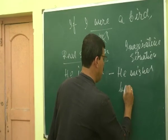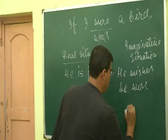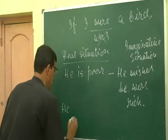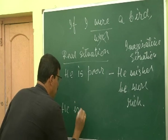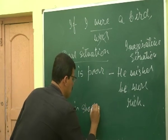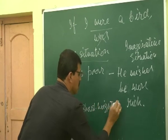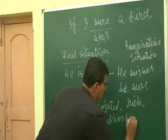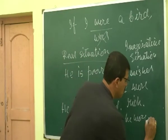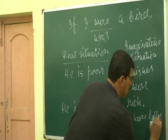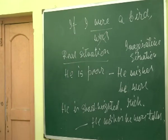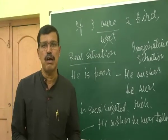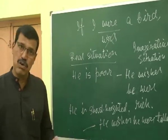In the imaginative situation: 'He were rich.' Similarly, 'he wishes he were' — these illustrate the past subjunctive. That's all about the past subjunctive. If you have any doubt, you may contact me. That's all.